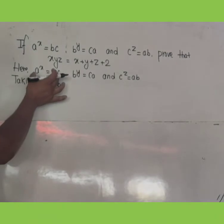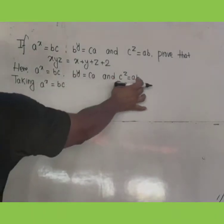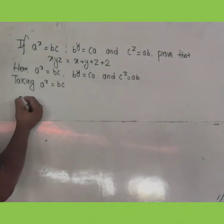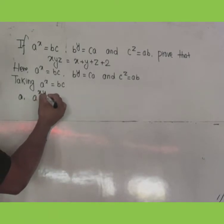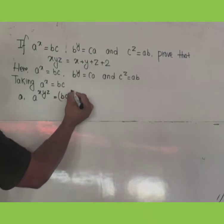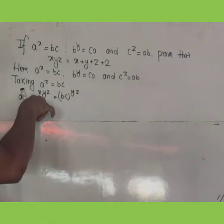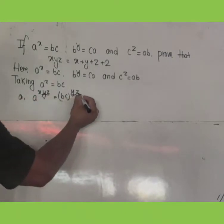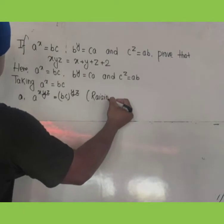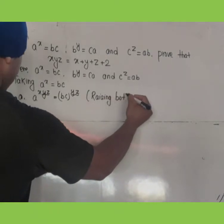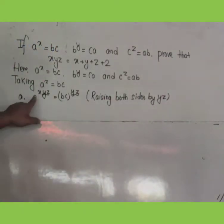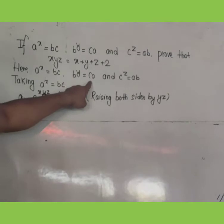You can take any one of the expressions to start problem solving. I'm taking the first one: a^x = bc. Now I'm raising both sides by yz, because I already have x and what I need is yz on the left side. So, raising both sides by yz.